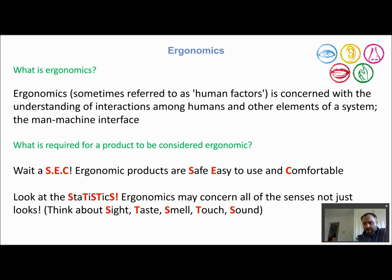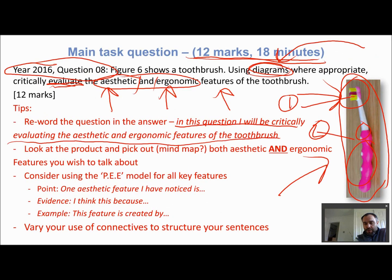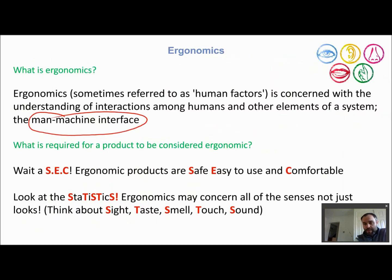Ergonomics is sometimes referred to as human factors, because it's about factors relating to how humans respond to and interact with products. It's concerned with the understanding of interactions among humans and other elements of a system. I like to use the term 'man-machine interface' — any product you're talking about is the machine, and you are the human. For the toothbrush, you interact with it in a multitude of ways: you pick it up, put it in your mouth, look at it, smell it, and taste it.